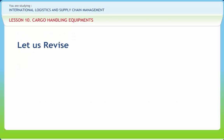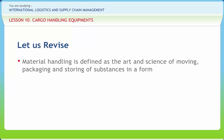Let us briefly revise what we have studied. Material handling is defined as the art and science of moving, packaging and storing of substances in a form. The scope of material handling activity within an organization depends on the type of product manufactured, the size of the organization, the value of the product, the value of the activity being performed, and the relative importance of materials handling to the enterprise.